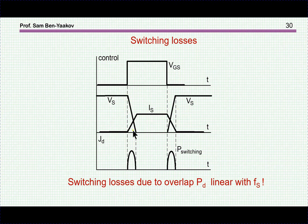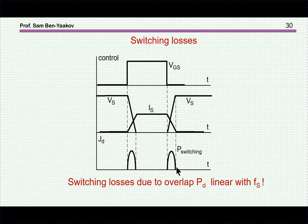During this transition there is an overlap, through the transistor, of the current and the voltage across it. Consequently there is a power loss within the transistor due to this energy, which is the product of voltage times current. The same thing occurs during the transition at the trailing edge.